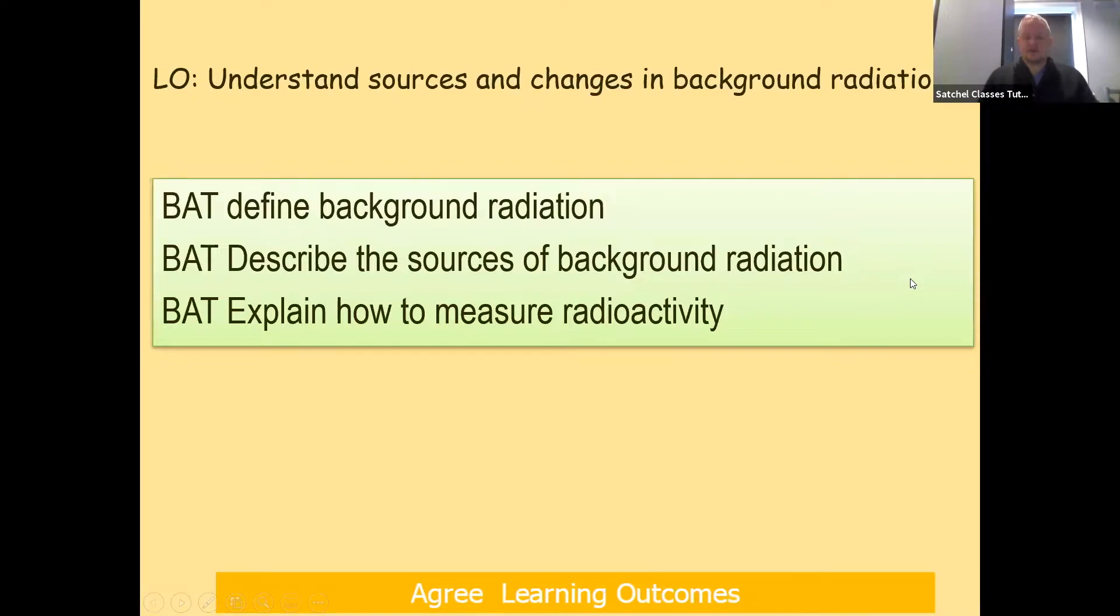What we've got to be able to do by the end of this is define background radiation, then we're going to describe some of the sources of background radiation, and finally explain how to measure radioactivity and the need for corrected count rate.